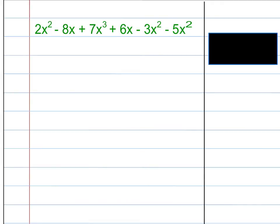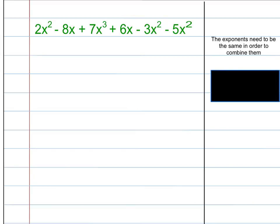Now, the different thing about this one you'll see is that this one has some exponents. Now, we talked at the beginning that it needs to have the same exact variable combination and the same exact exponents. So, the exponents need to be the same in order to combine them.